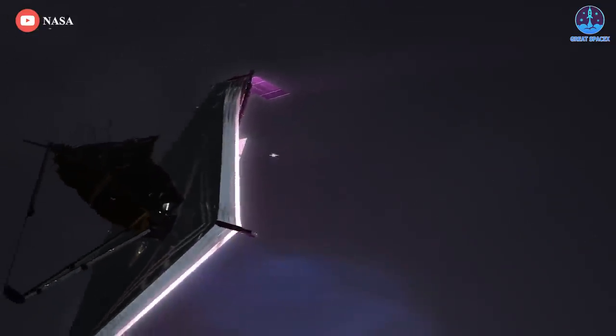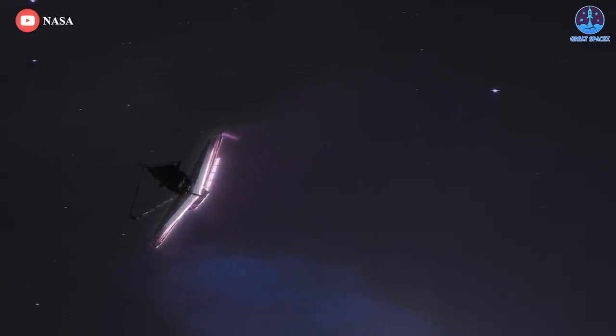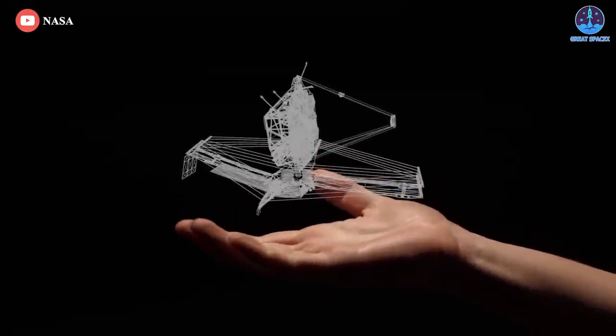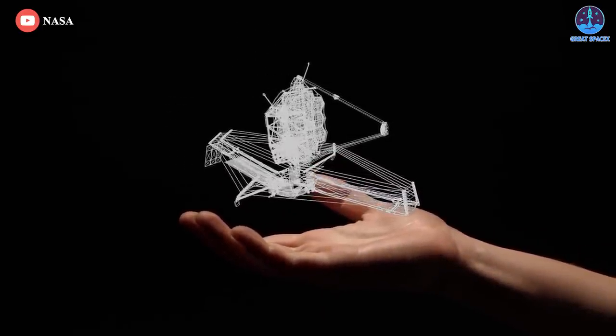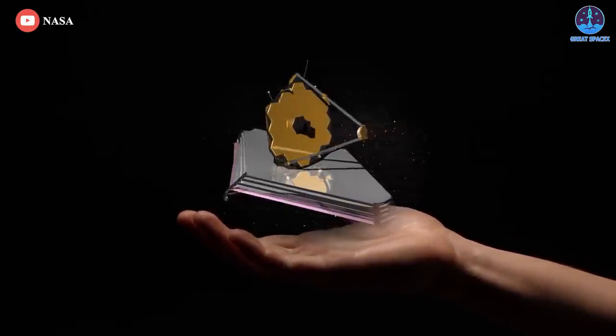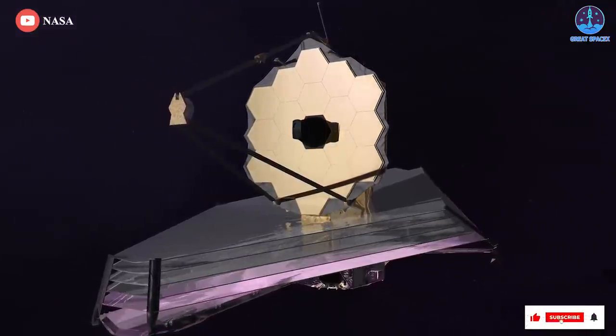Soon, JWST will enter its first year of Science Observations, otherwise known as Cycle 1 Science, which is jam-packed with plans to target exoplanets, galaxies, exotic stars, and more.